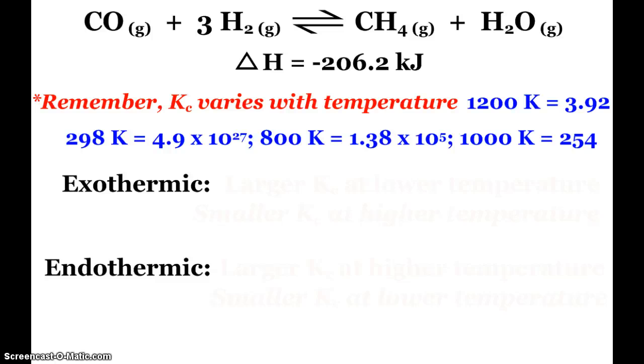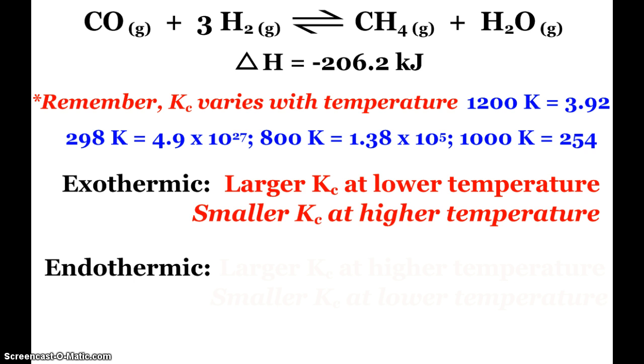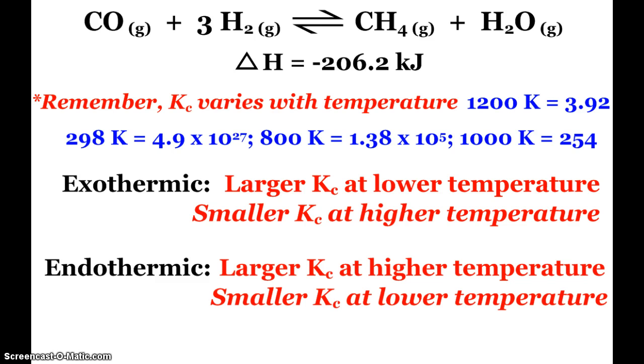So our methanation reaction has a delta H of negative 206.2 kilojoules. So it is exothermic. And if we also remember, our equilibrium constant varies with temperature. It was 3.92 as we were studying this reaction before at 1200 Kelvin. Way down at 298 Kelvin, it's 4.9 times 10 to 27. And it slowly goes up from there until you get to 1200. So what we see is an exothermic reaction is going to have a larger equilibrium constant at lower temperatures, smaller at higher temperatures, and vice versa for our endothermic. Endothermic reactions have large equilibrium constant at high temperatures, smaller at lower temperatures.